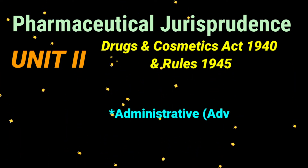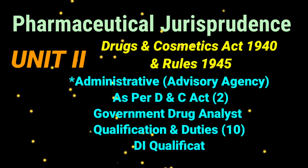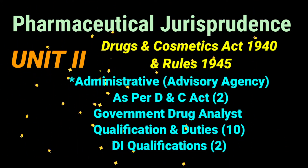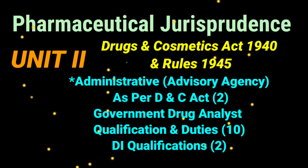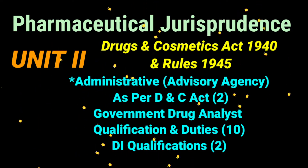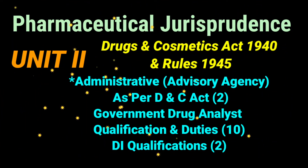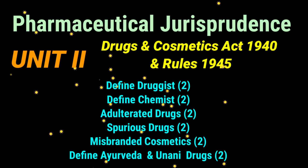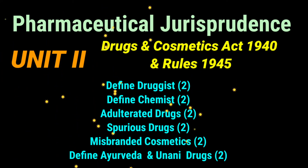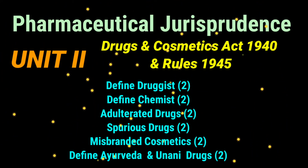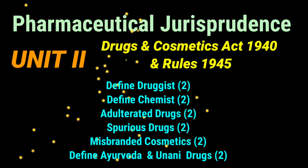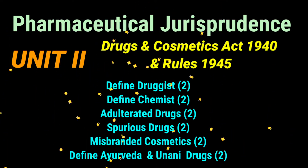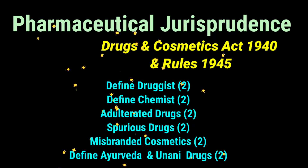Unit 2 also includes administration of the Act and rules, covering administrative authorities and agencies as per the Drugs and Cosmetics Act. Important questions include qualifications and duties of the Government Drug Analyst and qualifications of Drug Inspectors. Key definitions to study include: druggist, chemist, adulterated drugs, spurious drugs, misbranded cosmetics, and Ayurveda and Unani drugs.